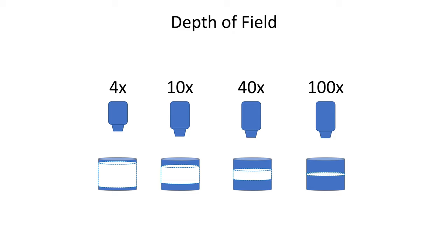Number two is the depth of field. This is the total thickness of a slide sample that is in focus. When you increase magnification, the depth of field decreases. This means that lower magnifications will have a thick slice of sample in focus, whereas higher magnifications can only focus on thin slices and will require you to focus up and down the sample to obtain sharp images at various depths.